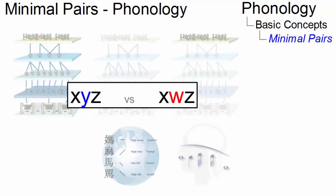In phonology, minimal pairs are pairs of words or phrases in a particular language that differ in only one phonological element and have distinct meanings.